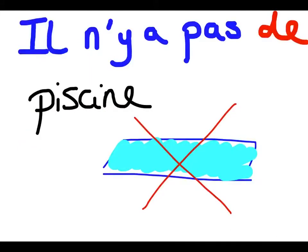Now if you want to say that there is not something, we must first use il n'y a pas. And then we don't use un or une after the pas — it always just changes to simply de. So for example, the sentence il y a une piscine — there is a swimming pool — to say that there is not a swimming pool, we change il y a to il n'y a pas, and we get rid of the une from une piscine and change it to de. Which gives us il n'y a pas de piscine — there is no swimming pool.